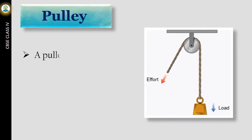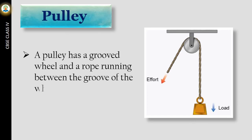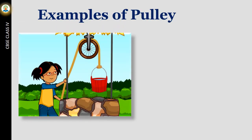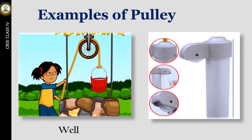A pulley has a grooved wheel and a rope running between the groove of the wheel. It pulls heavy objects easily. Examples of pulley are seen over the wells and at flag poles.